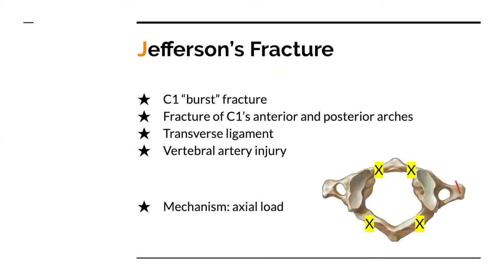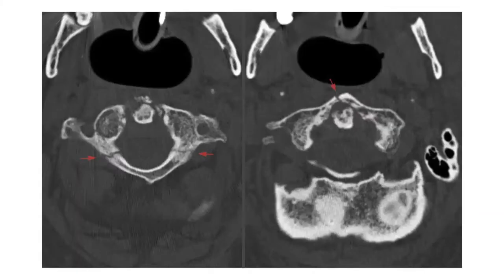Jefferson's fracture, also known as a C1 burst fracture: both the anterior and posterior arches need to be fractured, and the transverse ligament can also be disrupted. It may be associated with vertebral artery injury — remember the transverse foramen is right there where the artery courses nearby the fracture sites — so you should get a CT of the neck to assess for dissection or thrombosis. The mechanism is an axial load transmitted through the occipital condyles to the lateral masses. This fracture is considered unstable when the transverse ligament is disrupted. On AP X-ray you can see if the lateral masses have displaced enough that ligament rupture is likely. This is an example showing anterior arch fracture on the right and posterior arch fracture on the left.